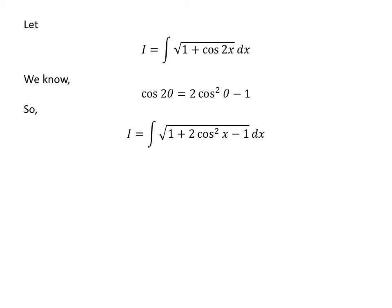So, I replaced cosine of 2x in the above integrand with 2 times square of cosine x minus 1. Cancelling out 1 with minus 1, we are left with integration of square root of 2 times square of cosine x with respect to x.